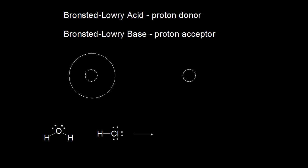Let's talk about the acid-base definitions for Brønsted-Lowry and also Lewis. We'll start with Brønsted-Lowry. A Brønsted-Lowry acid is a proton donor, and a Brønsted-Lowry base is a proton acceptor.